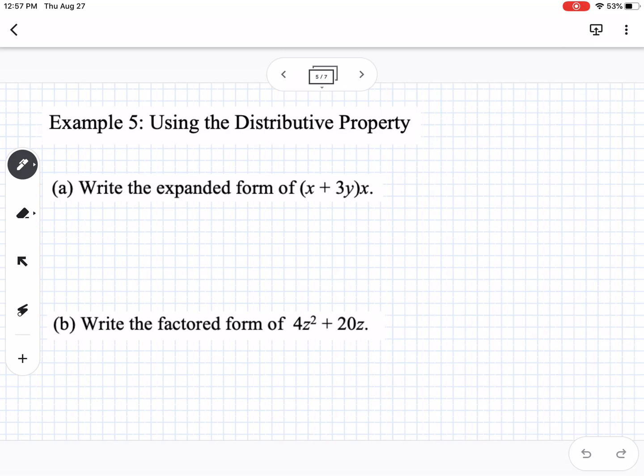The next topic is distributive property. This book puts the number after the parentheses, but we could rewrite it as x times (x + 3y). Those mean the same thing because 3 times 4 is the same as 4 times 3. We can rearrange when multiplying. Distributive property means we multiply everything by that x. So x times x is x², x times 3y is 3xy. That's how we do distributive property.